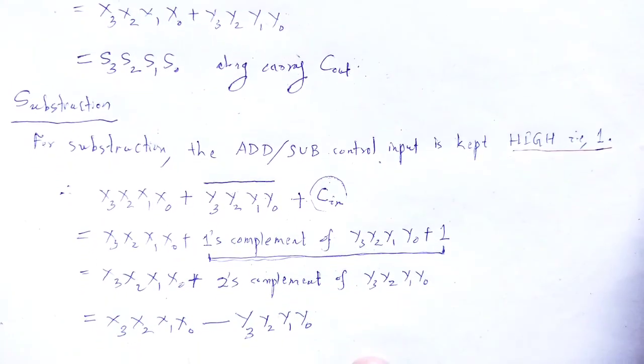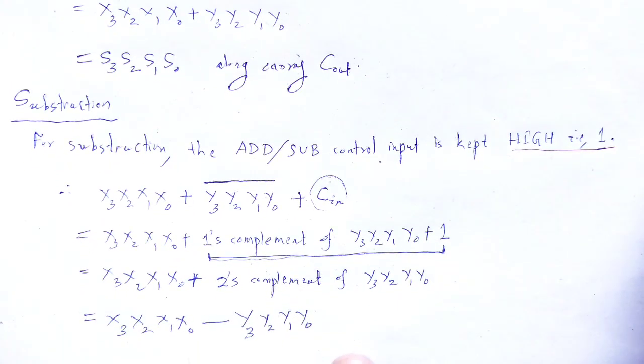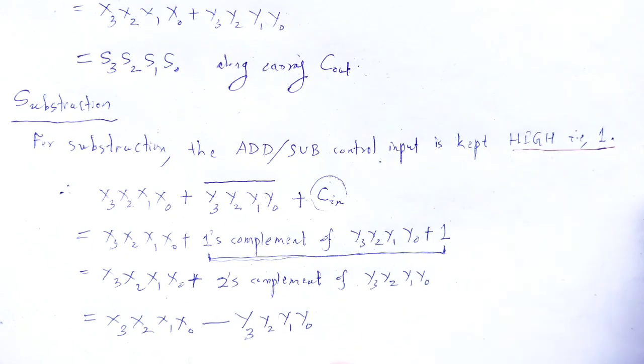So with the help of this visual lecture we understand the concept of the 4-bit parallel adder-cum-subtractor. We perform both addition as well as subtraction of 4-bit inputs. An XOR gate is used for controlled inverter purpose. For addition the control input is low, and for subtraction the control input is high. In this way we perform both arithmetic operations — addition as well as subtraction — using the 4-bit parallel adder-cum-subtractor. Thank you.